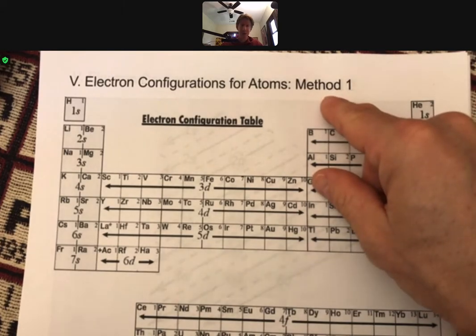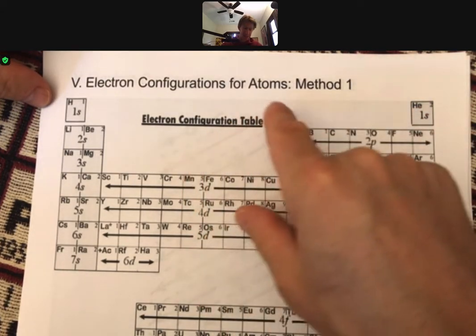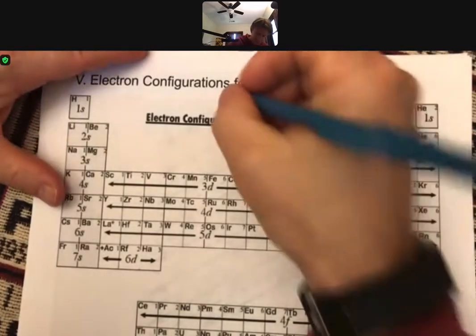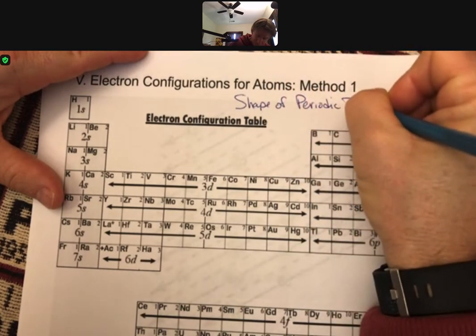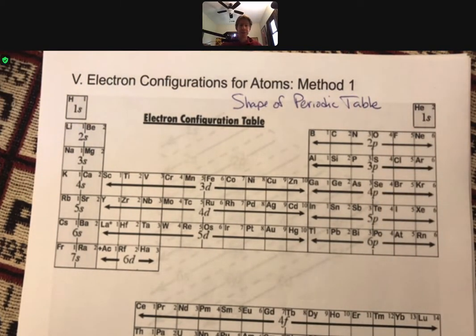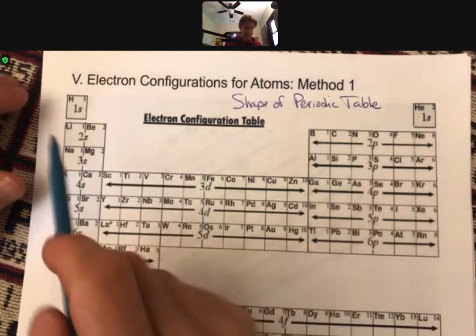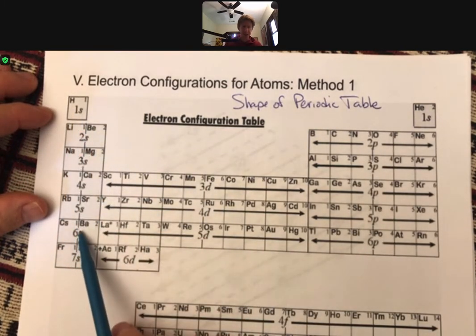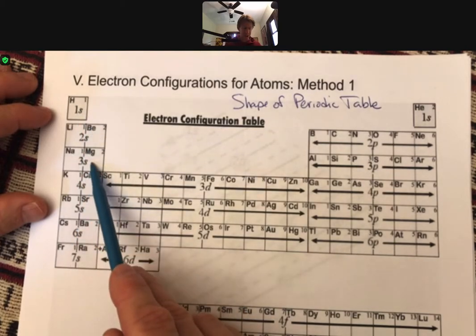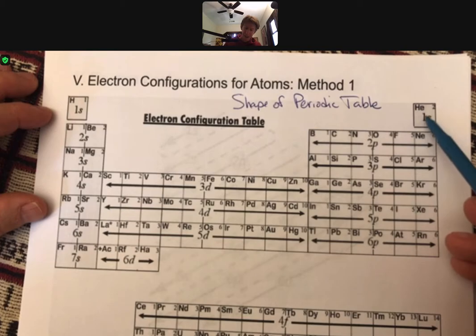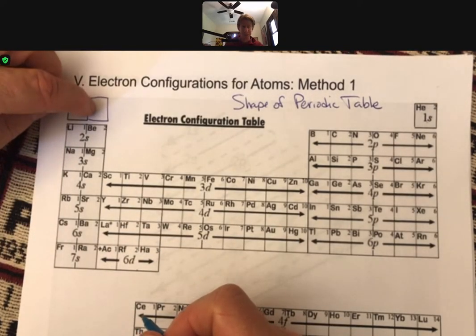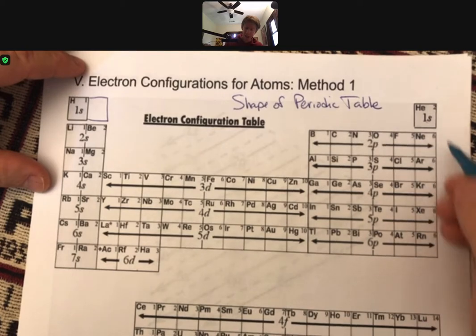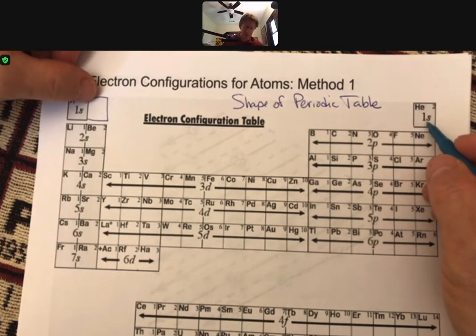Now, there's two methods to do electron configurations. Method one is called the shape of the periodic table method. That's actually the method that I prefer, although a number of students prefer to do it another way, which I'll show you in a minute. But according to the shape of the periodic table way, so this area or side of the periodic table is called the S area, starting with 1S, 2S, 3S, 4S, etc. Helium is in the 1S area. Maybe helium should be over here because it should be in the S area. However, since it acts, since it's a noble gas, most people do put it over here. I've seen some periodic tables that put it in both places, though.